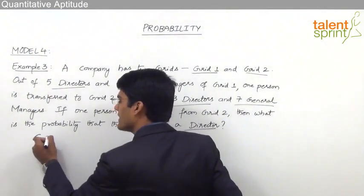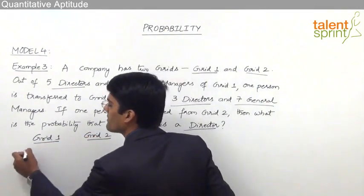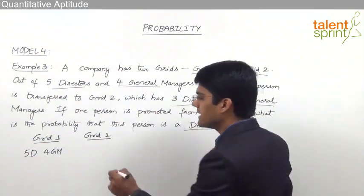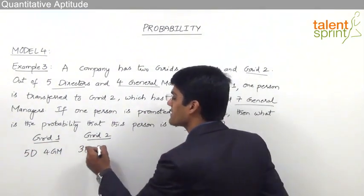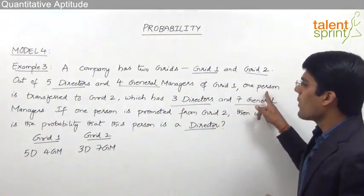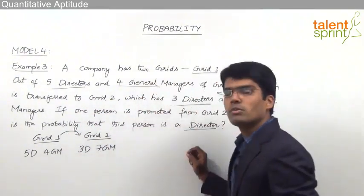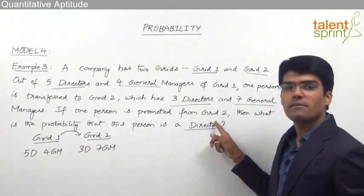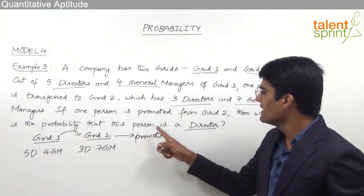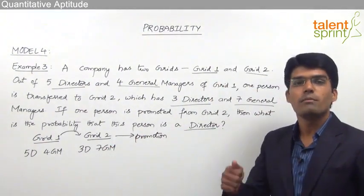Grid 1 has 5 directors and 4 general managers, whereas Grid 2 has 3 directors and 7 general managers. One person is transferred from Grid 1 to Grid 2, and then one person is promoted from Grid 2. We need to find the probability that the person who got promoted is a director.